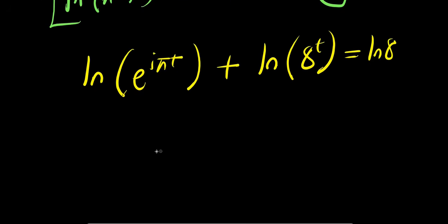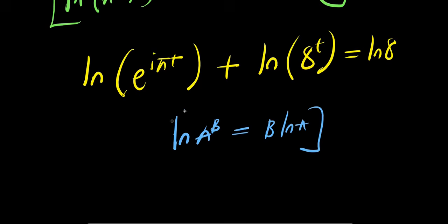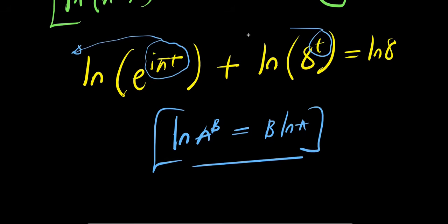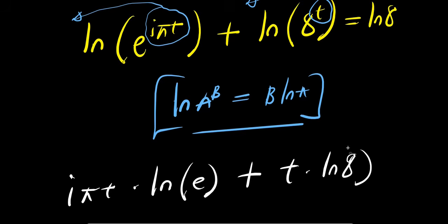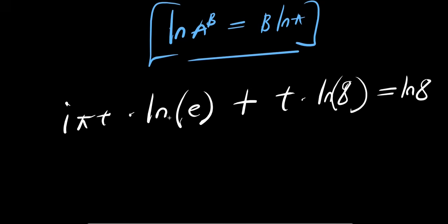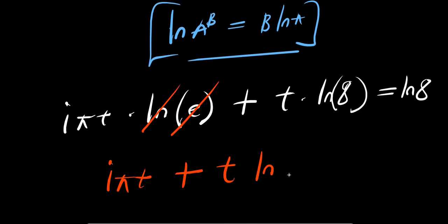Using the logarithm power property — natural log of A to the power B equals B times natural log of A — the exponents come out front. So I have i times pi times T times natural log of e, plus T times natural log of 8, equals natural log of 8. Since natural log of e equals 1, this simplifies to i times pi times T plus T times natural log of 8 equals natural log of 8.